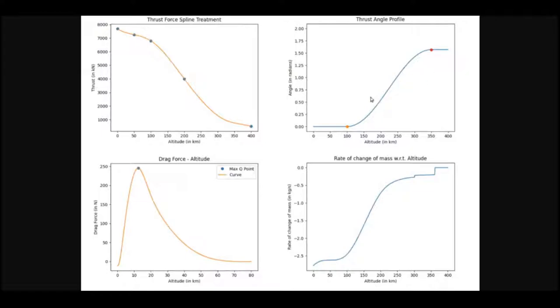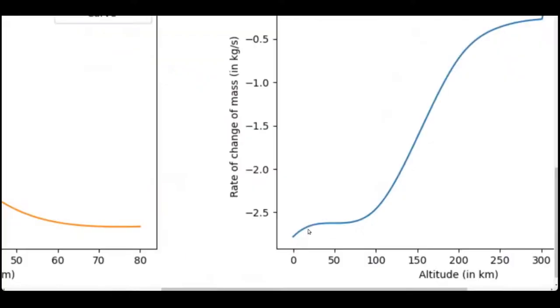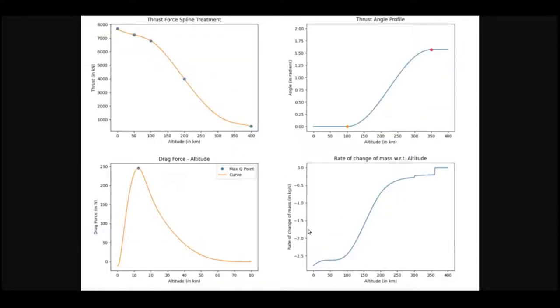Then we proceeded to obtain the variation of drag force and dm by dt with altitude from various different equations and using MATLAB, we plotted their graph as well. The sudden jump in graph 4 represents separation of stage 1 and stage 2 respectively. A change in ISP value was the reason for this.